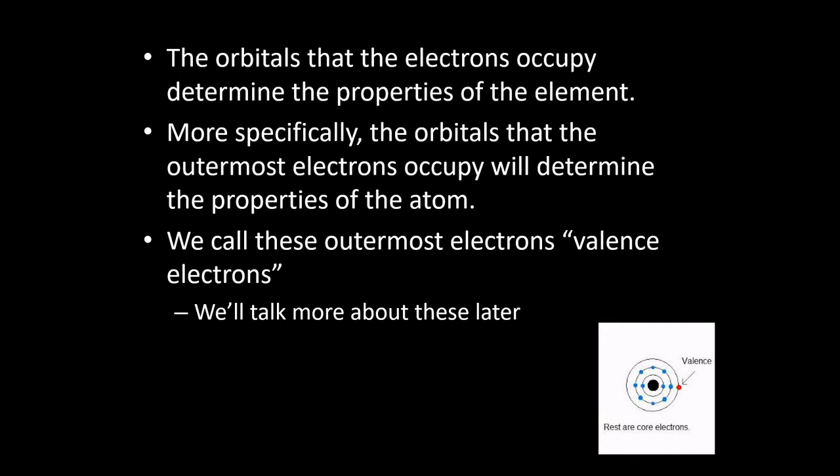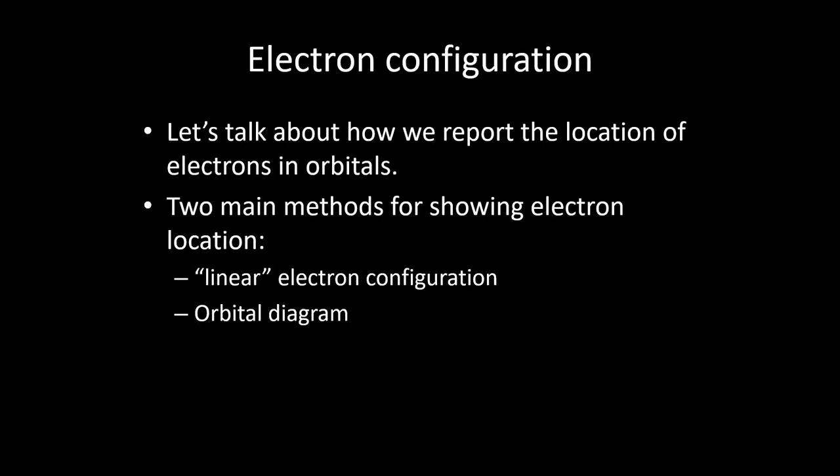The orbitals that electrons occupy determine the properties of the element. More specifically, the orbitals that the outermost electrons occupy will determine the properties of the atom. We call these outermost electrons — the ones farthest from the nucleus — the valence electrons. We'll come back to valence electrons later, but for now try to remember that the outermost electrons are the most important when it comes to chemistry.